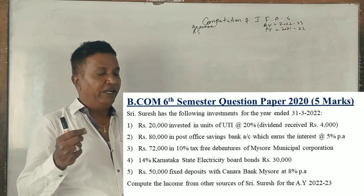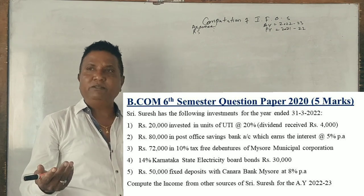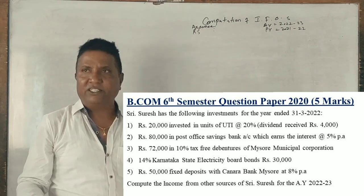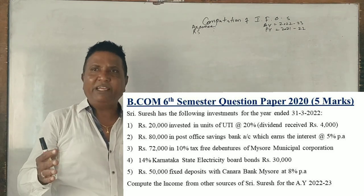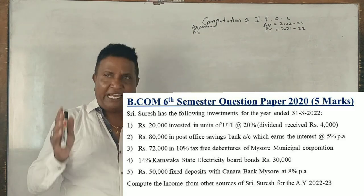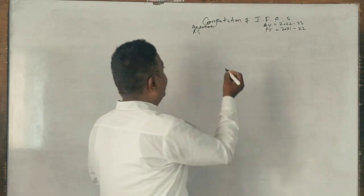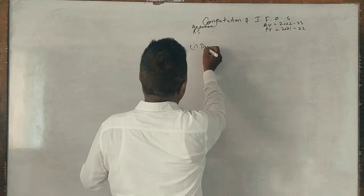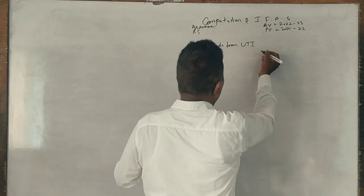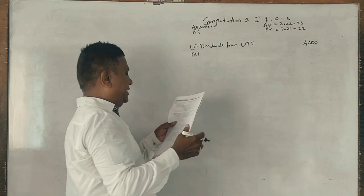At 20 percent, dividend received is 4,000. The 20,000 at 20 percent gives 4,000. Any dividends from UTI is fully taxable. Dividends from UTI, 4,000 rupees, fully taxable.